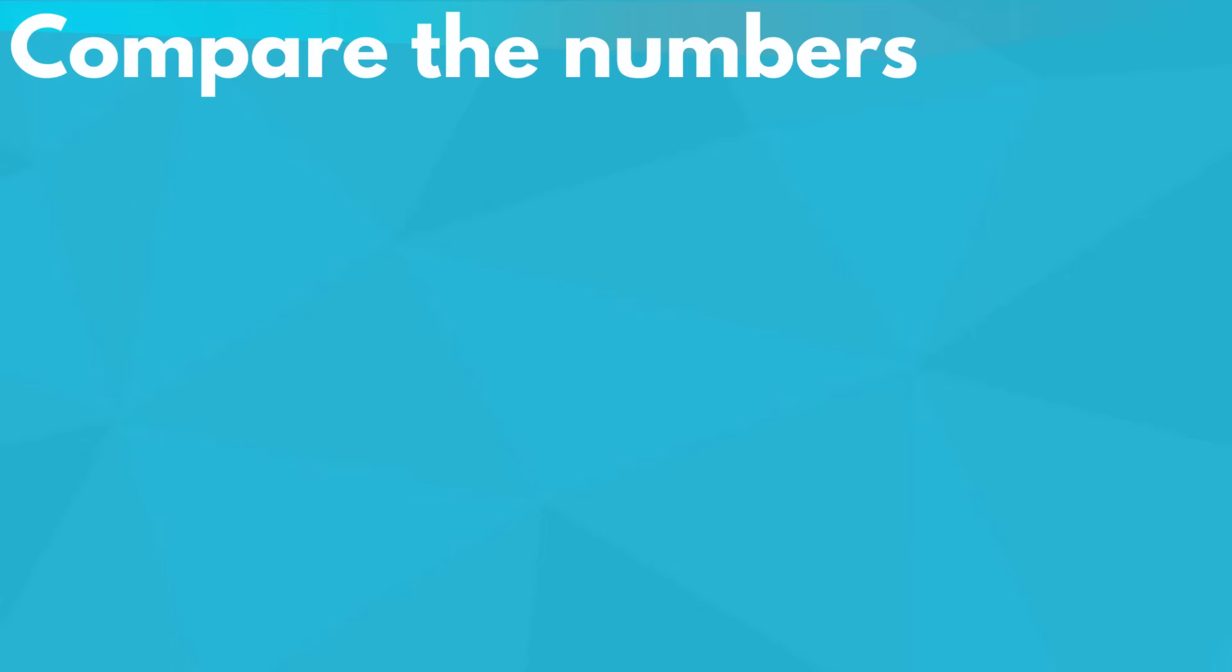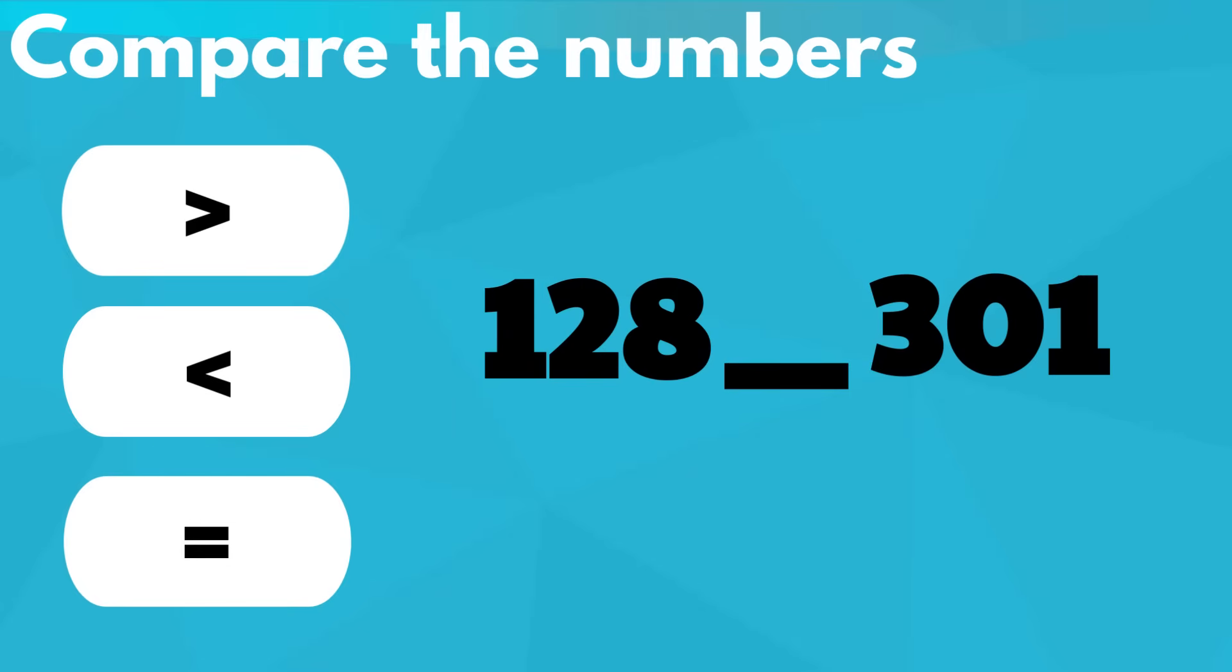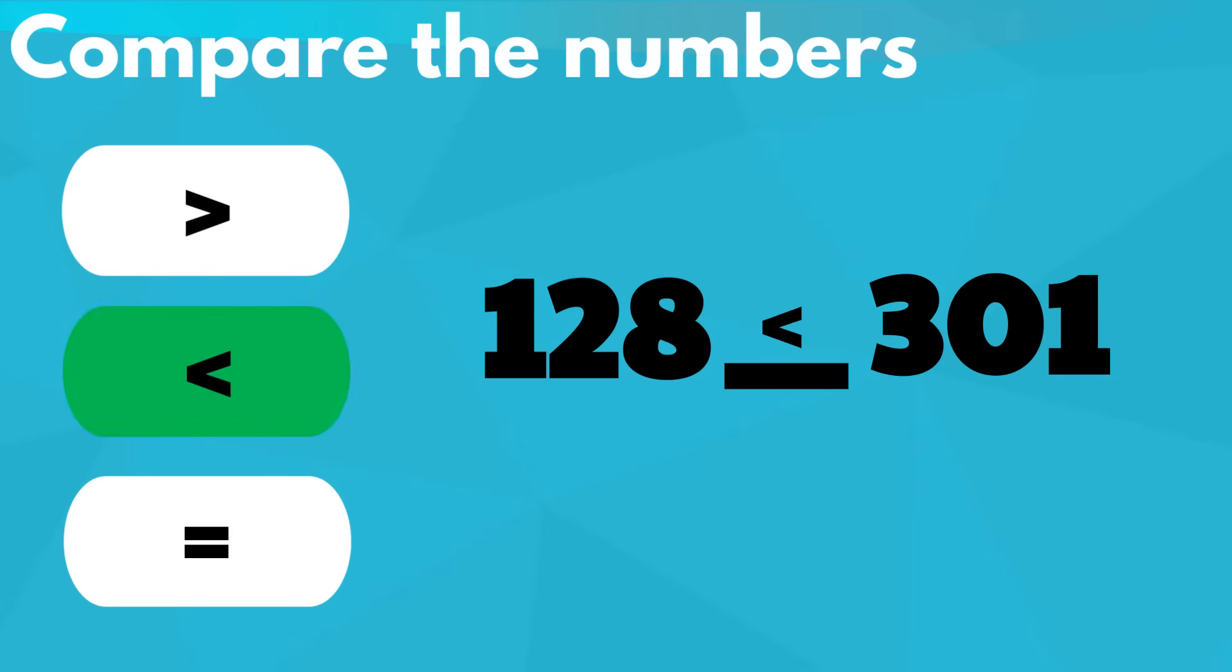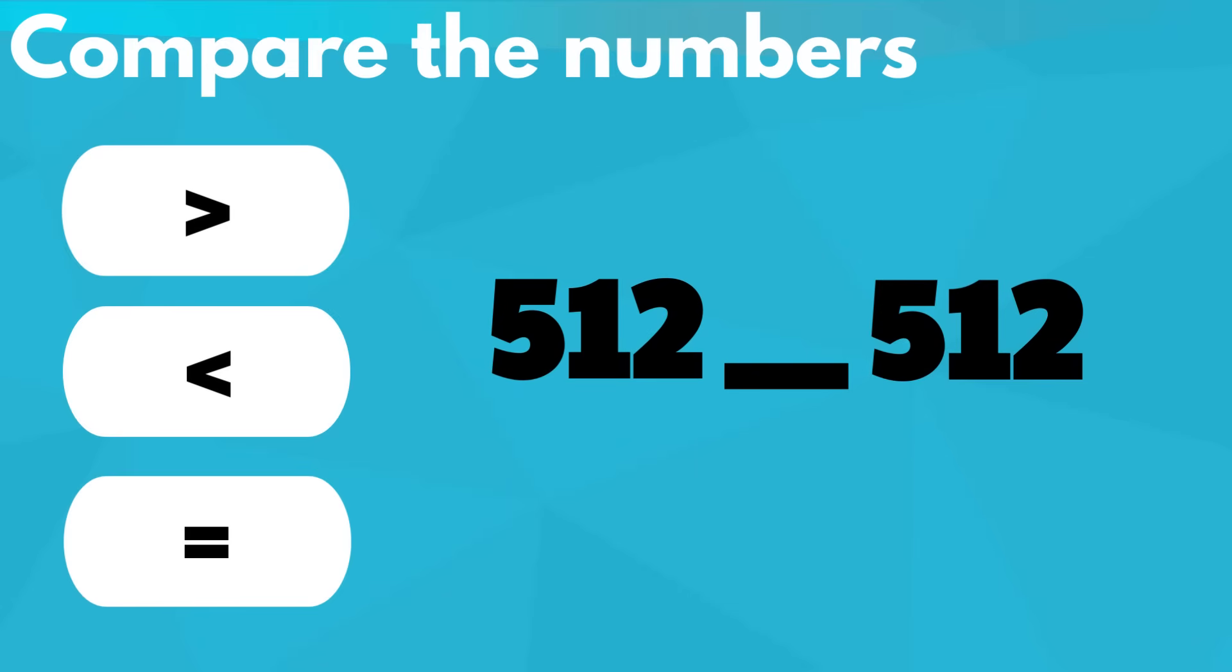Let's practice what we learned by comparing more numbers. Fill in the blank with either greater than, less than, or equal. Number one: 128 and 301. In the hundreds place, one is less than three, so the answer is less than.